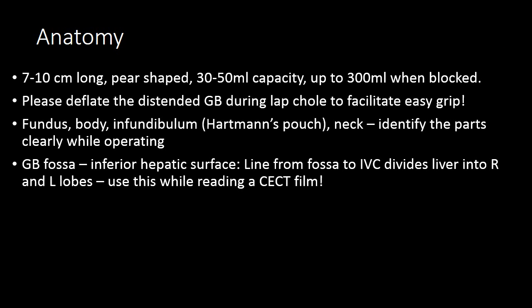The gallbladder is a pear-shaped sac, 7 to 10 cm in length and having a capacity of 30 to 50 ml. If it gets distended, it can become up to 300 ml in capacity. One needs to deflate the gallbladder if it's over-inflated during the lap chole so that it can facilitate an easy grasp. If it constantly slips, the liver also falls down with it and the anatomy of the Calot's triangle gets distorted.